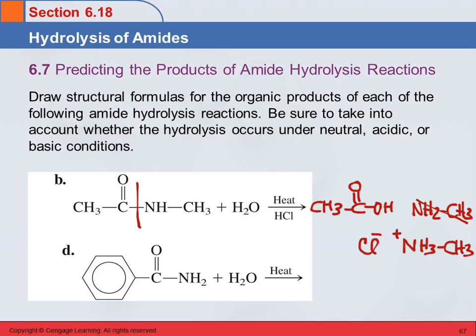For problem D, we cut there to get benzoic acid and ammonia. It doesn't say acid or base, so we'll just leave those as they are.